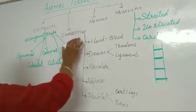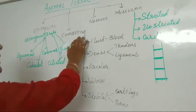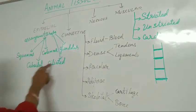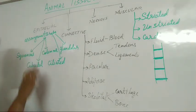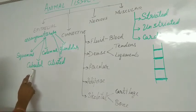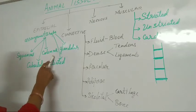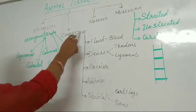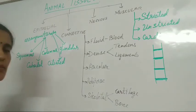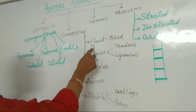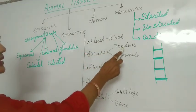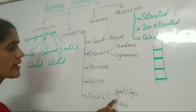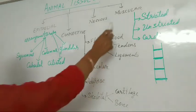So animal tissue — there are many types: epithelial, connective, nervous, and muscular tissue. Epithelial tissue is further classified into different types on the basis of its shape and arrangement: squamous epithelial tissue, cuboidal epithelial tissue, columnar epithelial tissue, ciliated epithelial tissue, and glandular epithelial tissue. Connective tissue is further divided into different types on the basis of its function: fluid connective tissue that is blood, dense connective tissue that is tendons and ligaments, areolar tissue, adipose tissue, and skeletal tissue. Skeletal tissue is further classified into cartilage and bone.